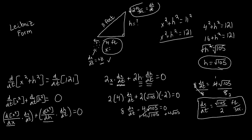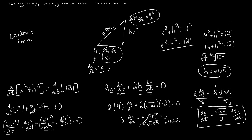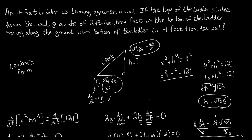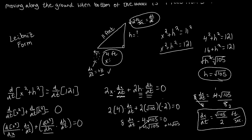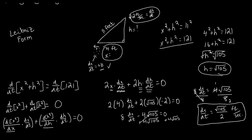Using all the given information, we found how fast the base of the ladder was moving at the exact moment it was 4 feet from the wall. With related rates, the hardest part is using the information given, making necessary assumptions like the right angle, and figuring out how to relate them — which we did using the Pythagorean theorem. After that, it was all implicit differentiation. You need to identify your starting point by asking: how can I relate this information together to solve for what I need?